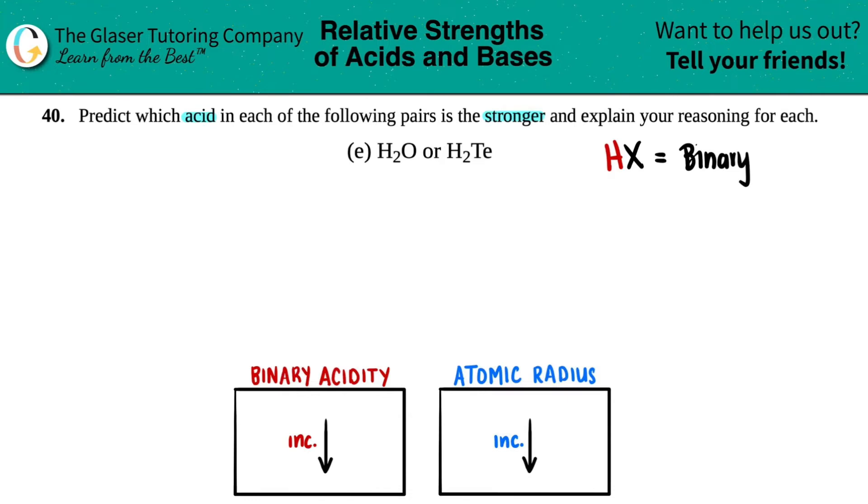Since both of them are binary acids, I could use my binary acid trend. As you go down a group, your acidity will increase. So if I just pinpoint where these two elements are on the periodic table...